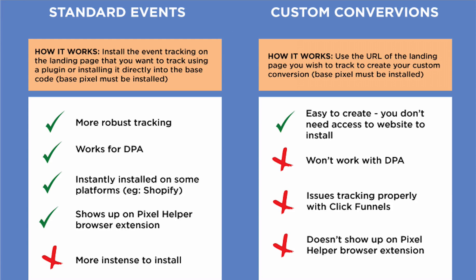A big benefit of standard events is that you need them for DPA — dynamic product ads — where you retarget people based on the specific products they visited. Think Amazon showing you products you checked out in a carousel ad. Standard events are also instantly installed on some platforms: if your client is on Shopify, standard events like add-to-cart and purchase are already on the relevant product pages. Additionally, if you're auditing a client's website using the Pixel Helper Chrome extension, you can see which standard events they've installed.